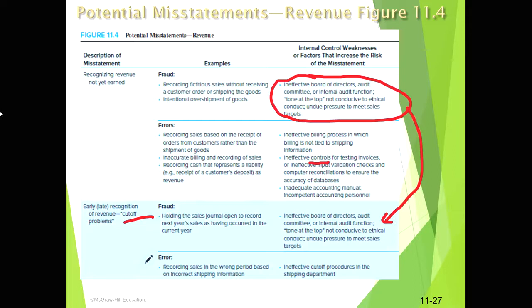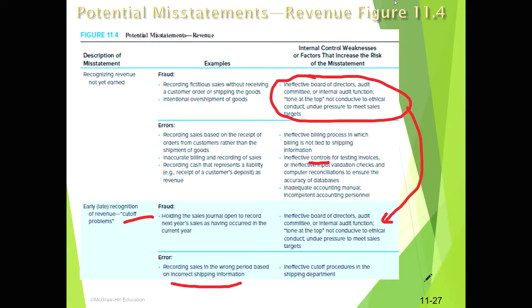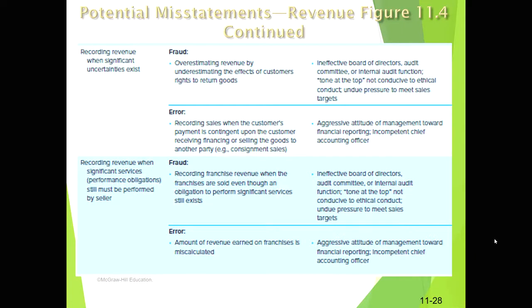The error side of the cutoff problem might involve incorrect shipping information — for example, if the shipping department is not notifying billing appropriately. Say you had orders in the last week of the year that don't get shipped until the next year, and billing isn't being notified, that error could occur. It's really a control issue or process issue.